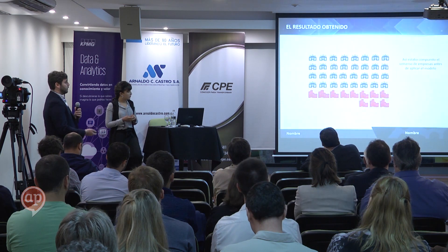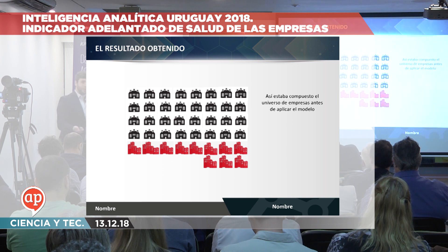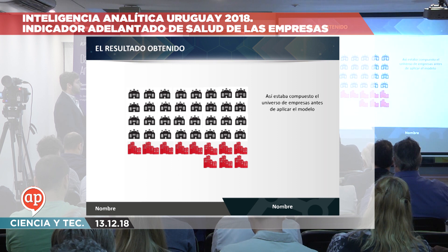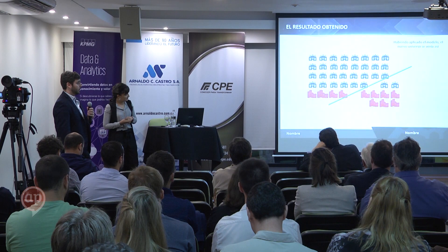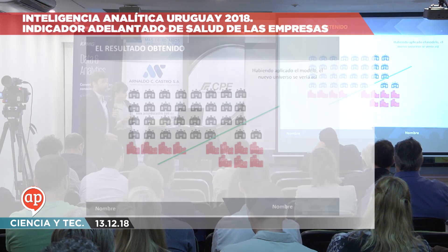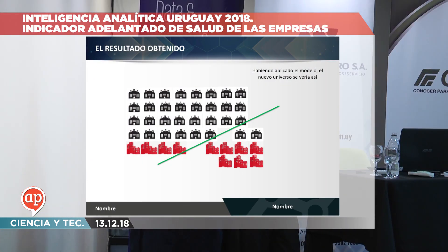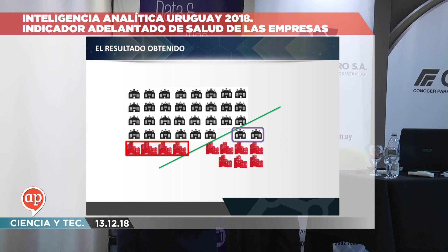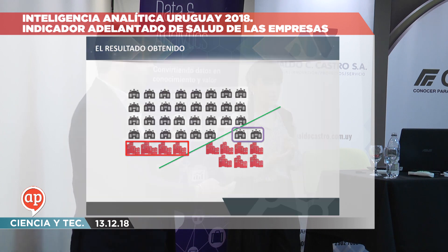¿Y qué es lo que pasó a partir del modelo? No podíamos poner 44.000 casitas, entonces pusimos 44.000. Lo que pasó fue que el corte del modelo genera que la mayor parte de las empresas que quedan tienen buena salud y la mayor parte de las que se van tienen mala salud.